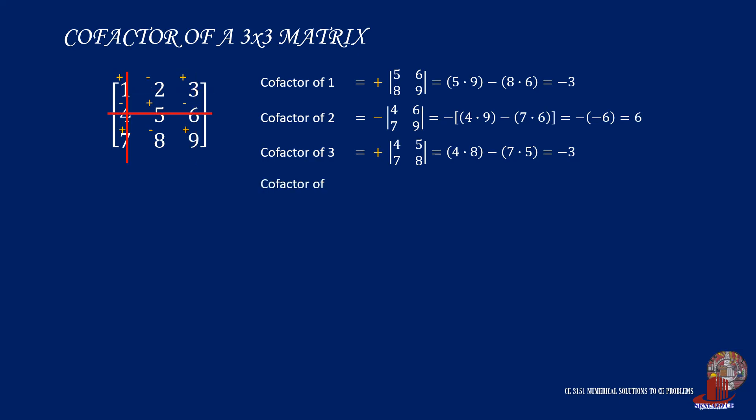The cofactor of 4 will have a preliminary sign of negative, so take the determinant of 2, 3, 8, and 9 as the negative of 2 by 9 less 8 by 3 or again the negative of negative 6, thus the cofactor is positive 6. The cofactor of the middle element is positive, so simply multiply 1 by 9 and take away 7 by 3 yielding the cofactor as negative 12. The cofactor of 6 would be simplified as negative of 1 by 8 minus 7 by 2, and this is also the negative of negative 6, making it positive 6 again.